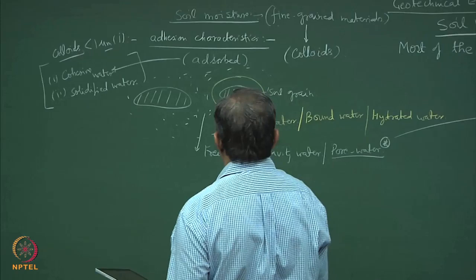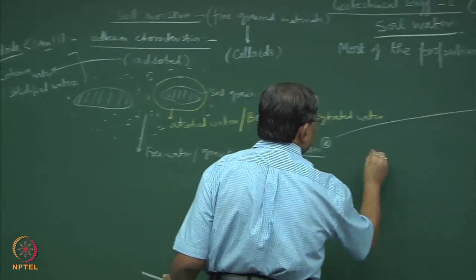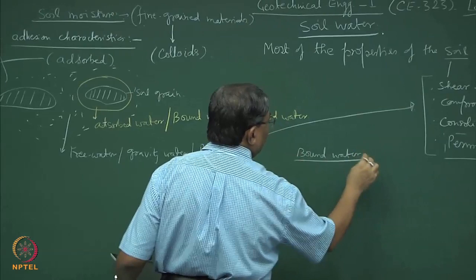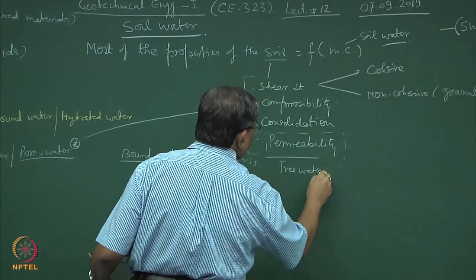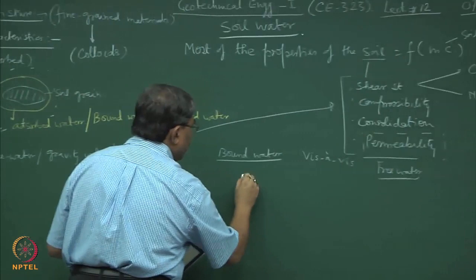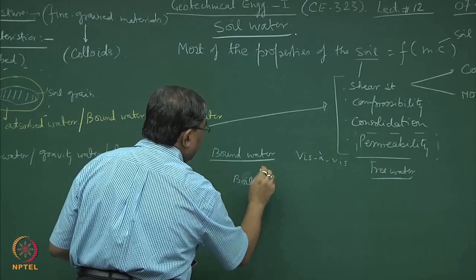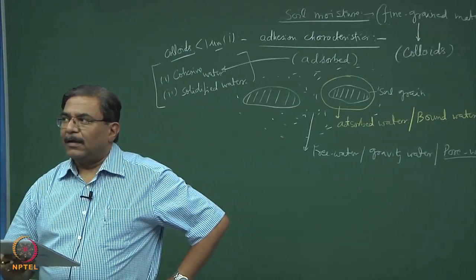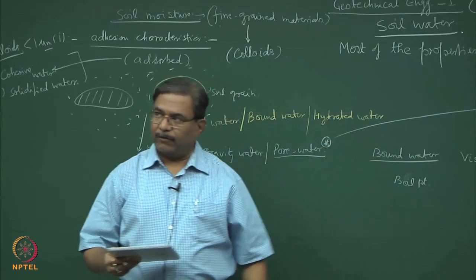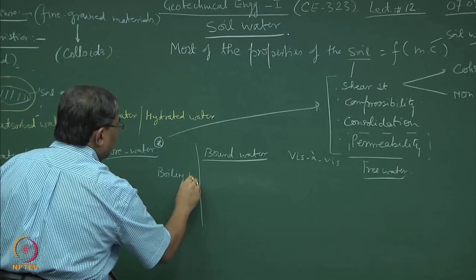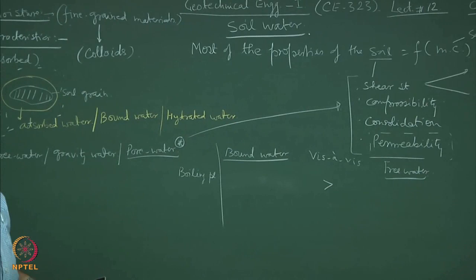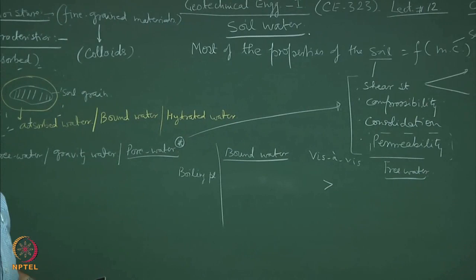If you compare bound water and free water, the boiling point of bound water will be higher than that of free water. The water is bound by the particle and the particle has a lot of electromagnetic forces acting on it, so its boiling point is going to be higher than free water. Similarly, the bound water boiling point is higher than the free water boiling point.